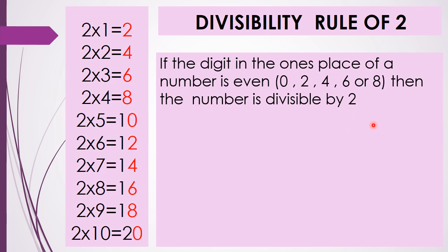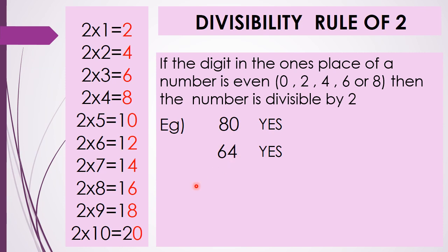Now let us check this rule with the help of examples. 80 has 0 in the 1's place, so it is divisible by 2. 64 has 4 in the 1's place, so it is also divisible by 2. 58 has 8 in the 1's place, so it is also divisible by 2. 49 has 9 in the 1's place, so it cannot be divisible by 2 — 49 is not divisible by 2.